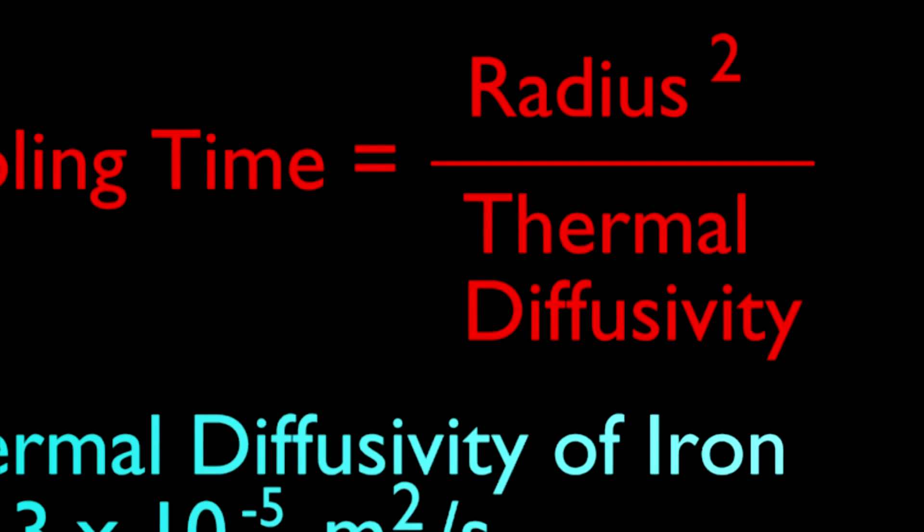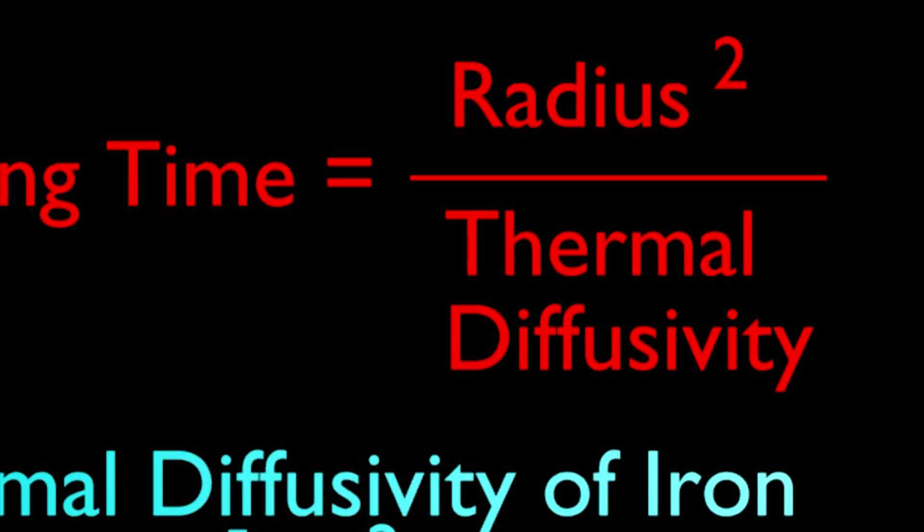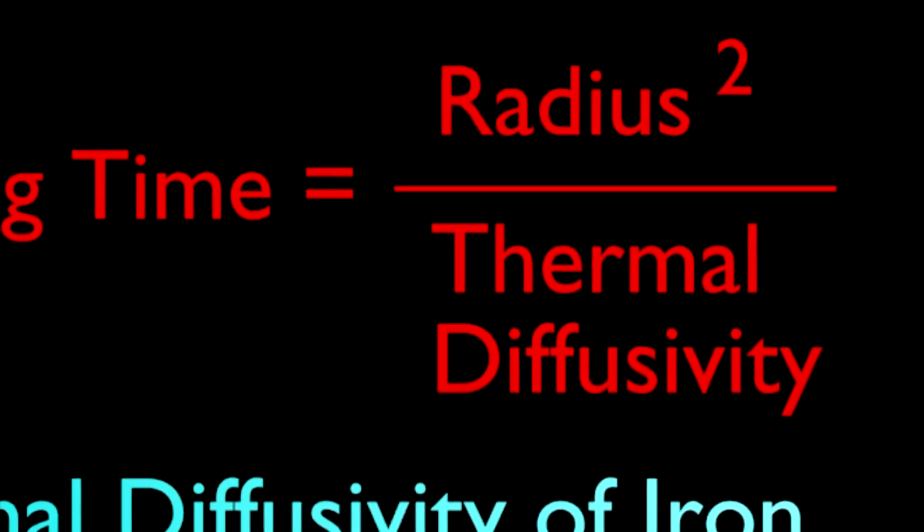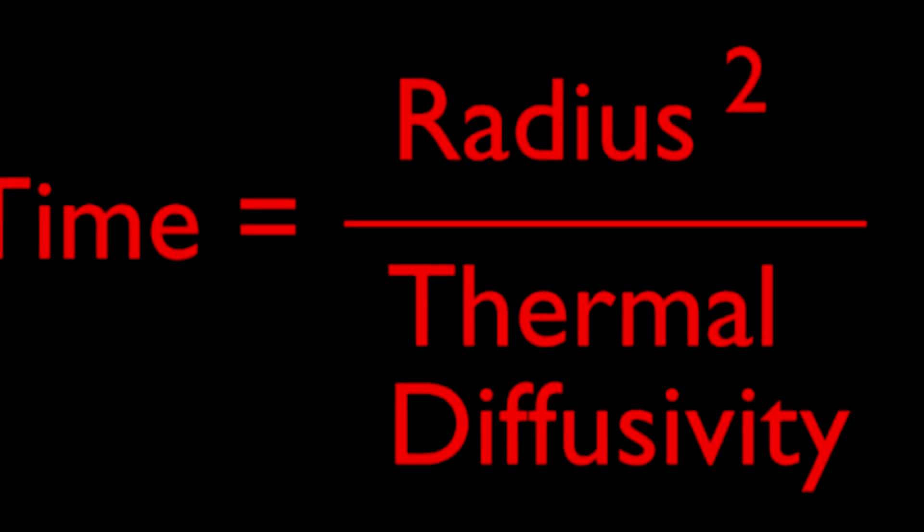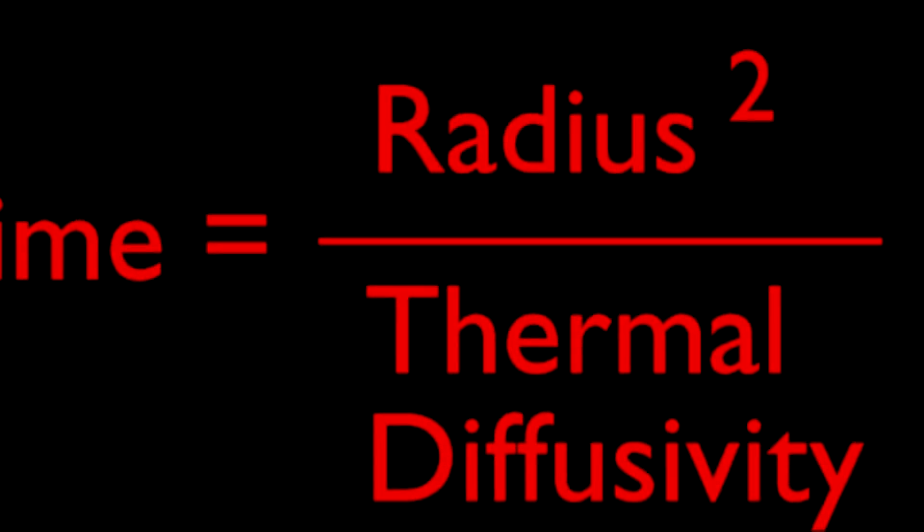But Jupiter is a billion times larger than the objects we are familiar with, like macaroni and cheese, so its cooling time will be a billion squared times longer than the cooling times of objects we are familiar with. That's 10 to the 18 times longer than the cooling times we are familiar with.